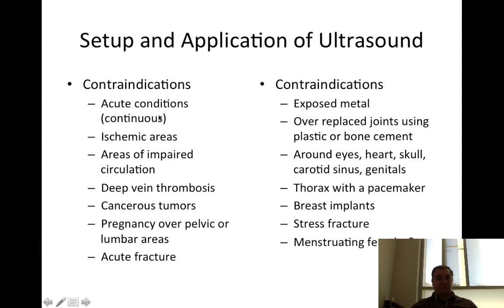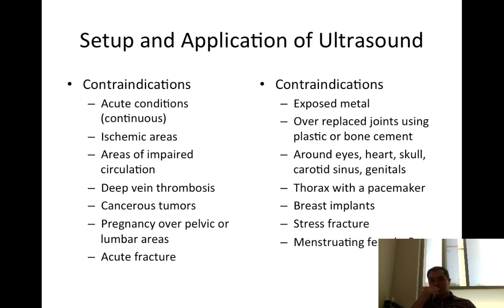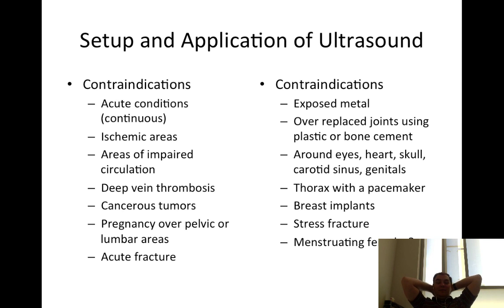Contraindications for ultrasound include: acute conditions for continuous ultrasound, ischemic areas or areas of impaired circulation, DVT (deep vein thrombosis), cancers, tumors, pregnancy over pelvic or lumbar areas, acute fractures, exposed metal, over replaced joints using plastic or bone cement (check surgical notes), and areas around the eyes, heart, skull, carotid sinus, and genitals. Also contraindicated over the thorax with a pacemaker and over breast implants.